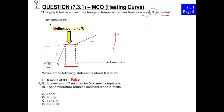Statement two says it takes about seven minutes for X to melt completely. X starts melting at the ninth minute and melting ends at the sixteenth minute — total timing is seven minutes, so that is a true statement. Statement three: the temperature remains constant when X melts — that is true because at the flat portion of the graph, the temperature is indeed constant. So two and three are correct, and the answer has to be D.